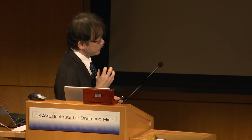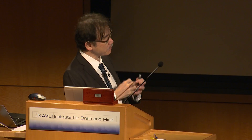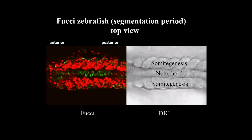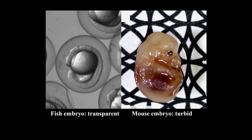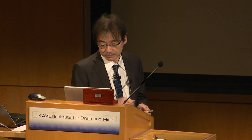It's very amazing that we can visualize the middle of the body from outside, just because fish embryos are very transparent. By contrast, mouse embryos and mammalian animals including us are opaque — visible light scatters very much inside our bodies.